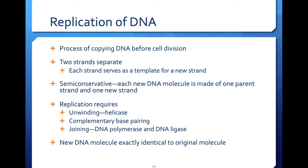In order for replication to occur, three main things must happen. First, the DNA must unwind — this is performed by the protein helicase. Second, complementary base pairing must occur in the new strand. Third, the two strands must be joined together — this is the action of DNA polymerase and DNA ligase. Once this process is complete, the new DNA molecule is an exact identical copy of the original.